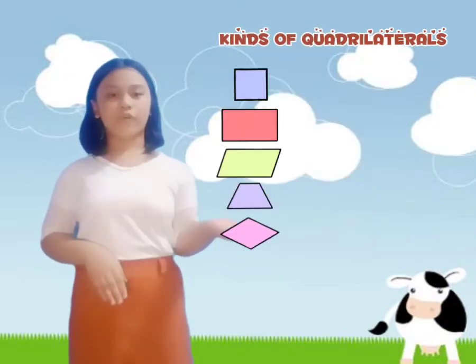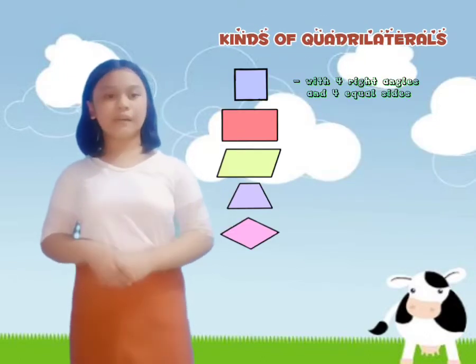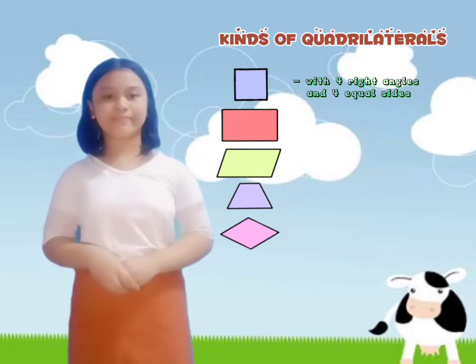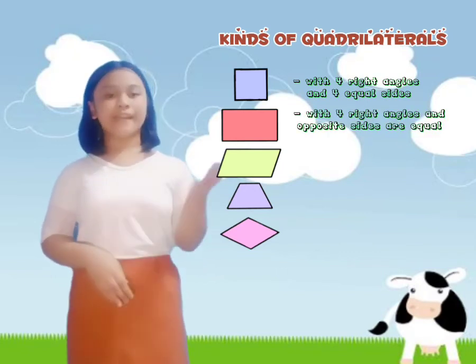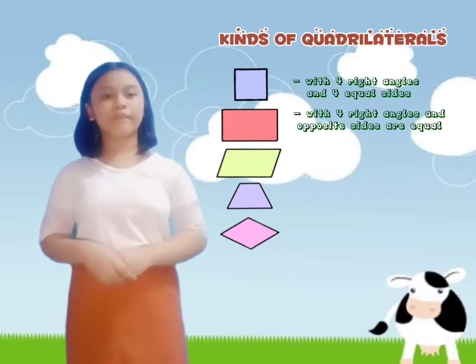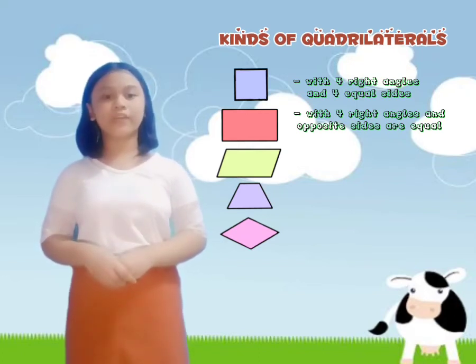A square is a parallelogram with four right angles and four equal sides. A rectangle is a parallelogram with four right angles, and its opposite sides are equal.